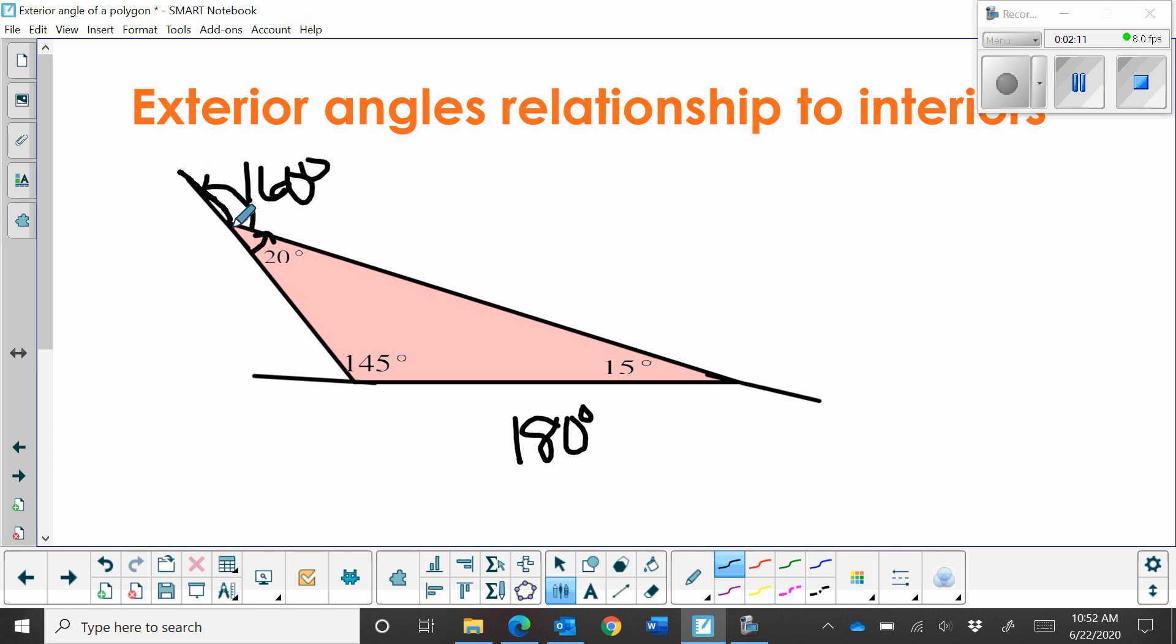Because we have a straight line right here, and a straight line is 180 degrees, so I take 180 minus 20 to get the 160.